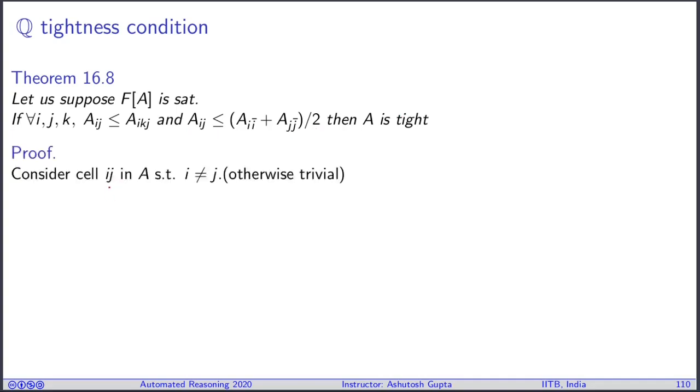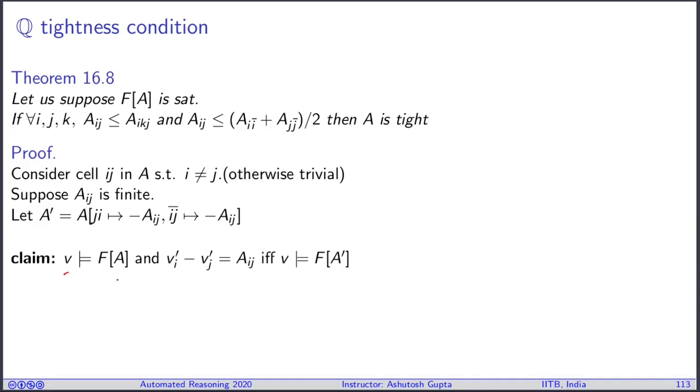How do we prove that? Consider a cell ij such that i is not equal to j. Suppose aij is finite. You take a matrix A and transform it: the ji entry becomes minus aij and the ij_bar entry becomes minus aij. By doing so, any assignment that satisfies f(A) will take the value aij, and you want to show that this also satisfies f(A').